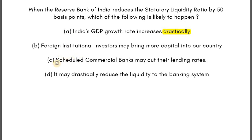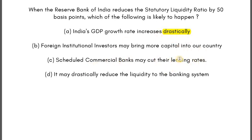The answer is C — scheduled commercial banks may cut their lending rates. SLR is the amount of certain government securities, gold, and liquid assets that banks need to keep with them. If the SLR drops by 50 basis points, banks have more money available to lend to people, so they may cut their lending rates. This is quite self-explanatory.